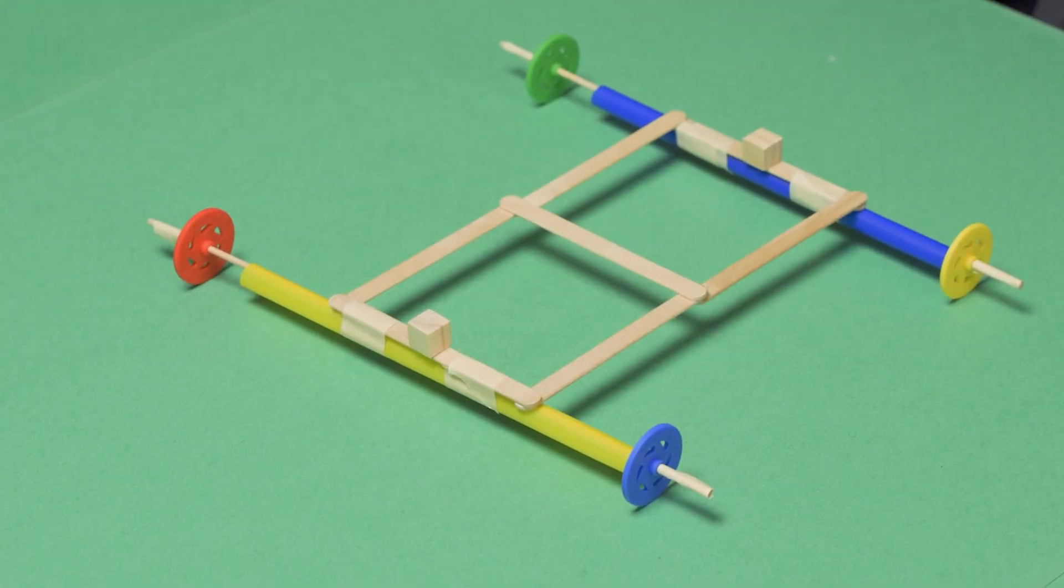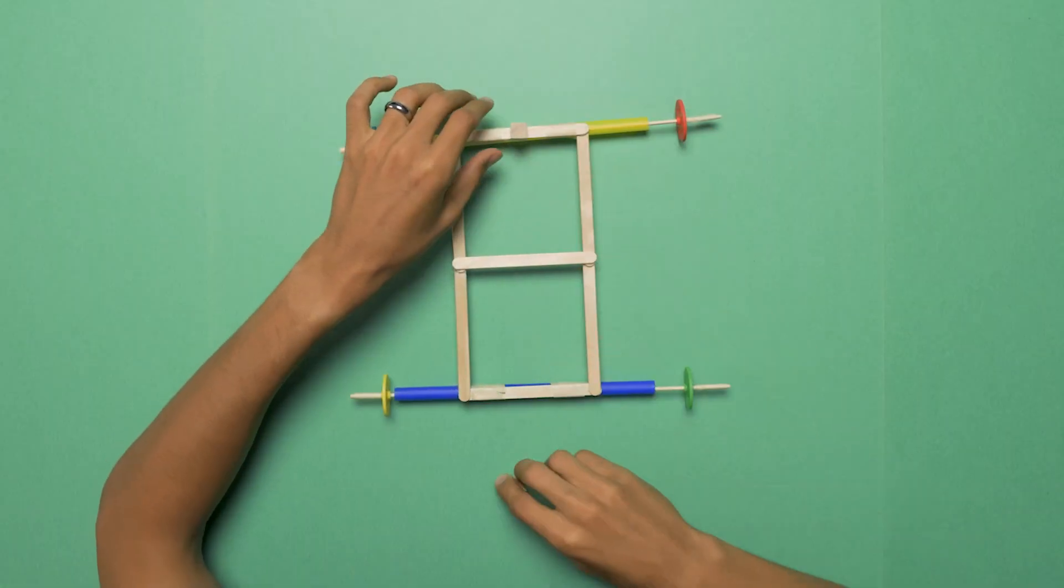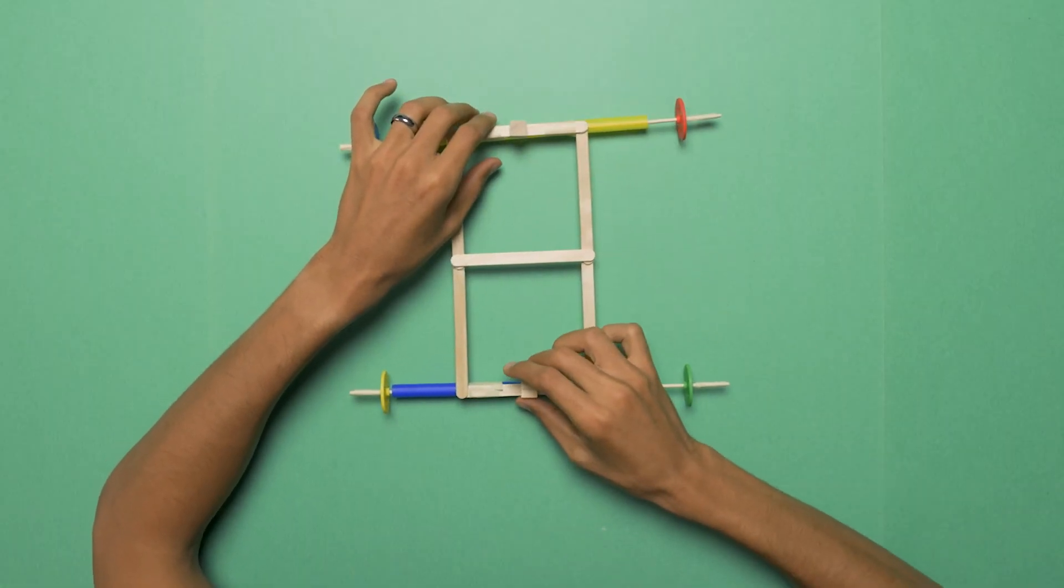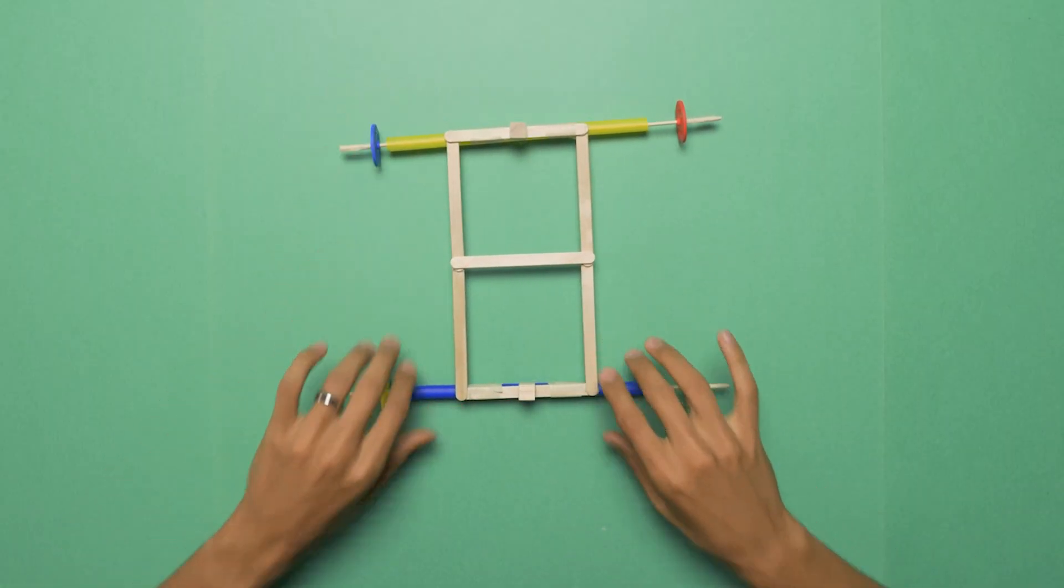We need to glue down these two cubes, one in the front and one in the back. You want to make sure they're as close to aligned as possible.